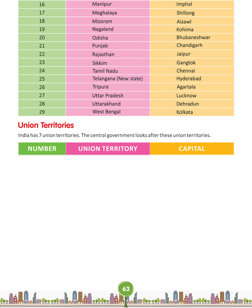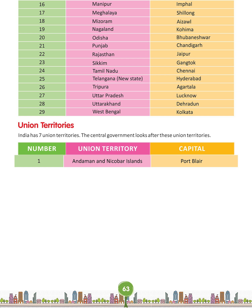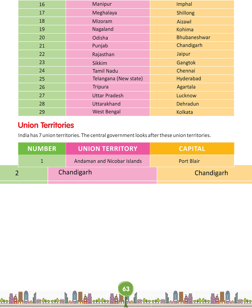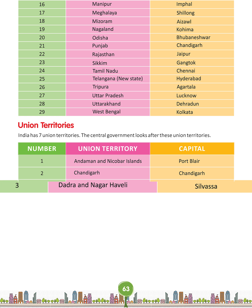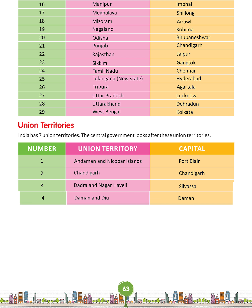Union Territories. India has seven Union Territories. The Central Government looks after these Union Territories. First: Andaman and Nicobar Islands — Port Blair. Second: Chandigarh — Chandigarh. Third: Dadra and Nagar Haveli — Silvasa. Fourth: Daman and Diu — Daman.